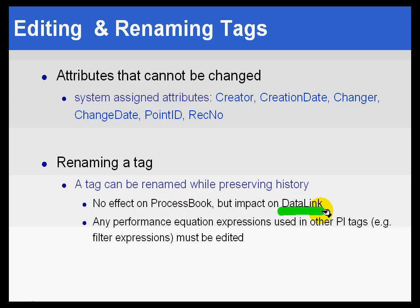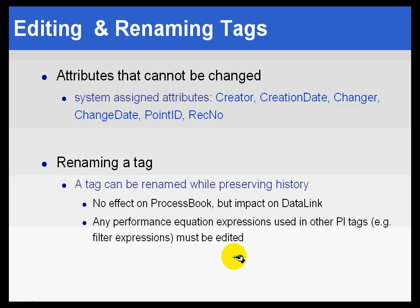However, Datalink is an add-in to Excel, and we simply hard-code the name of the tag in Datalink. So any Datalink reports — after you edit the name of a tag — you're going to have to update those reports. Also, if you've got any performance equations or expressions that use PI tag names, that's going to continue to work up until the point when you stop and restart performance equations. So that's something you obviously need to edit. Better to edit anything that may be affected right after making changes.